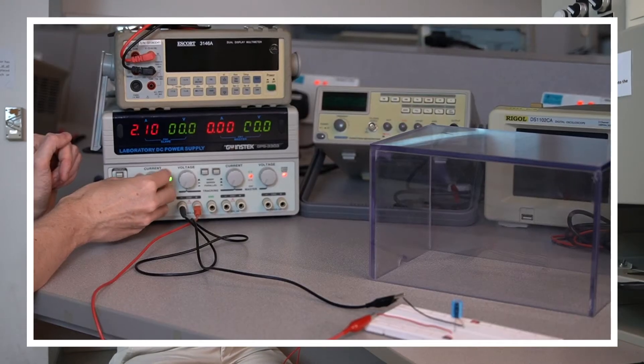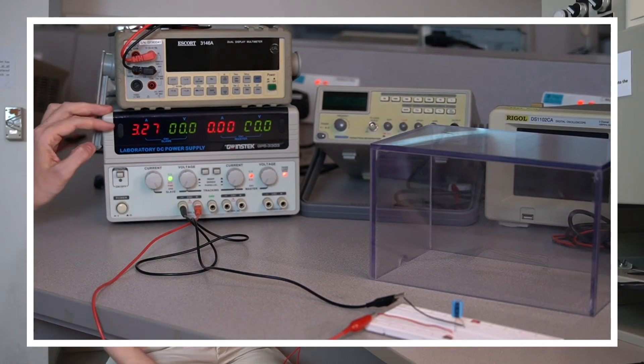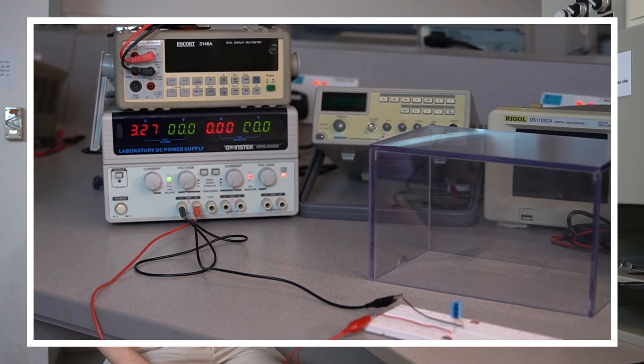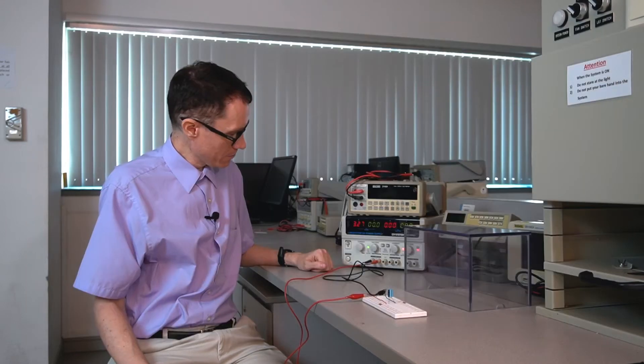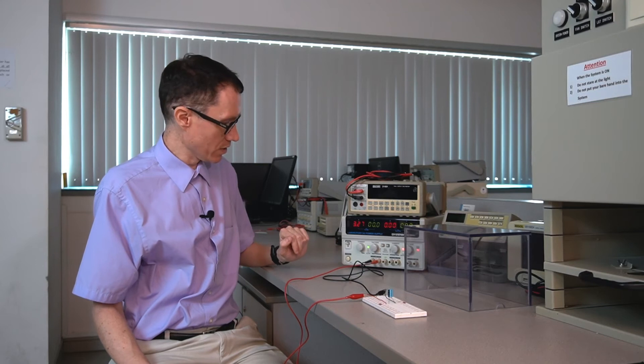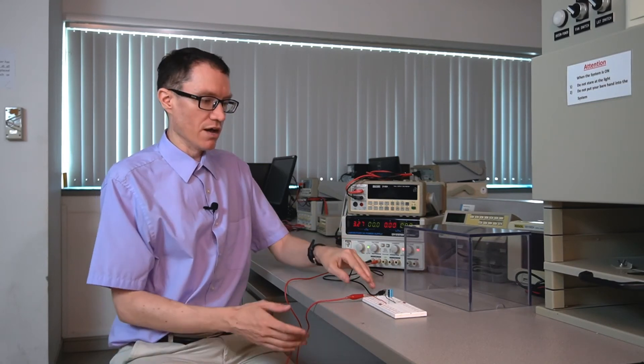I'm going to turn the current all the way up to compliance, which means this power supply should be able to supply 3.27 amperes if called upon to do that. The voltage right now is zero and the output is off.